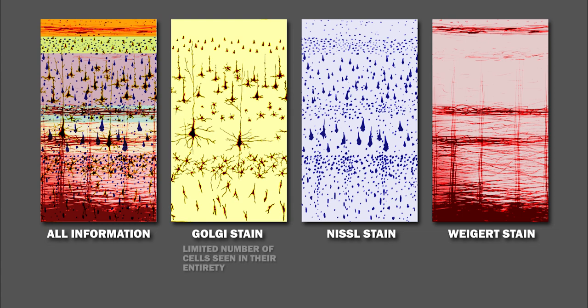The Golgi stain stains a limited number of cells at random in their entirety. This is useful because otherwise, neurons are so densely packed that it would be difficult to observe their structure.